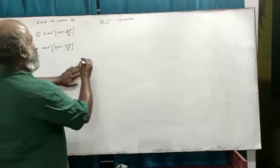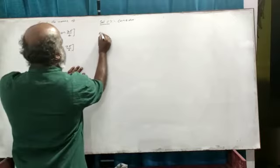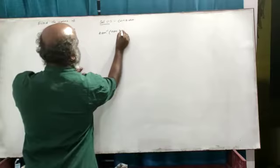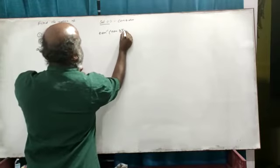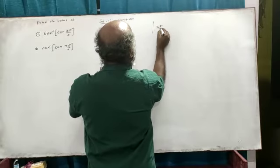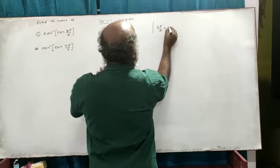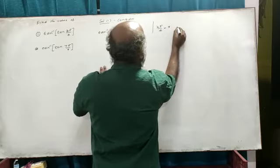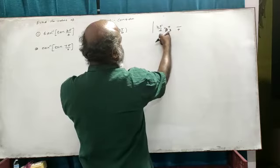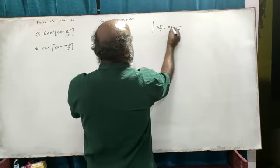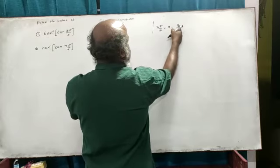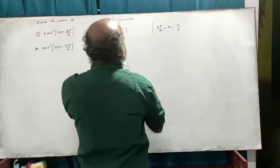Let's look at this. Consider tan inverse of 3π/4. Now, 3π/4 equals π minus π/4, since 4π/4 minus π/4 equals 3π/4.